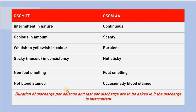The discharge in CSOM-TT is intermittent in nature because it increases when the patient has upper respiratory tract infection, basically common cold. When there is perforation of pars tensa and the patient gets a common cold, there will be infection of the middle ear leading to discharge that lasts around 7 to 10 days, after which it becomes better. But in case of CSOM aticoantral disease, the discharge is continuous because there is persistent low-grade infection going on.